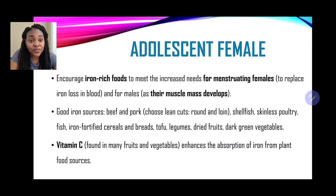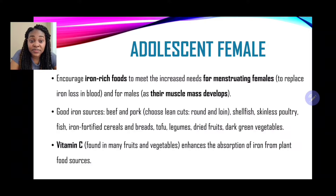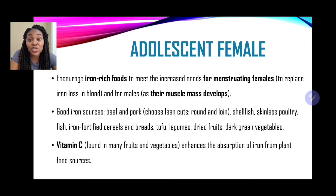Encourage iron-rich foods to meet the increased needs for menstruating females, to replace iron lost in blood. For males, iron is needed for their muscle mass to be developed. Good sources of iron include beef and pork, shellfish, poultry, iron-fortified cereals and breads, legumes, dried fruits, and dark green leafy vegetables. Vitamin C is also very important and is found in many fruits and vegetables. Vitamin C enhances the absorption of iron, especially from plant sources, also called non-heme iron sources.